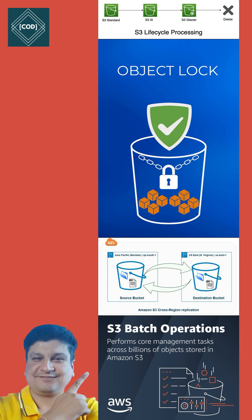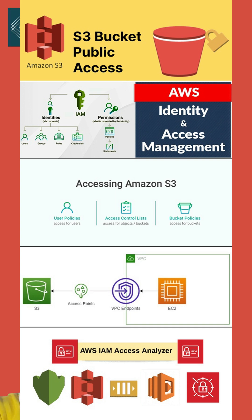Third feature: access management and security. Amazon S3 provides features for auditing and managing access to your buckets and objects. By default, S3 buckets and objects are private. Some access management features are: S3 Block Public Access, AWS Identity and Access Management, bucket policies, S3 Access Points, Access Control Lists, S3 Object Ownership, and IAM Access Analyzer for S3.